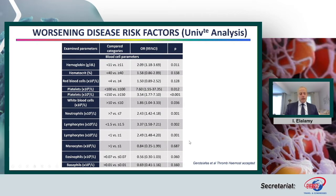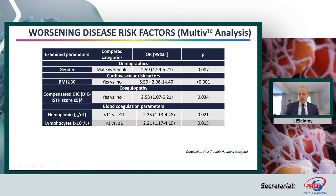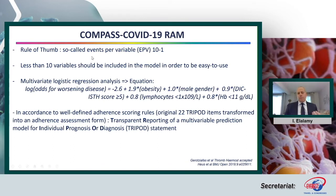Regarding the multivariate analysis, we retained only five factors: male gender, obesity, an increased DIC score over five, anemia below 11 g/dL, and lymphopenia below 1,000. These five parameters helped us build the COMPASS COVID-19 risk assessment model. We followed the rule of thumb — the so-called event per variable 10 to 1 — choosing to keep fewer than 10 variables to keep the model easy to use.